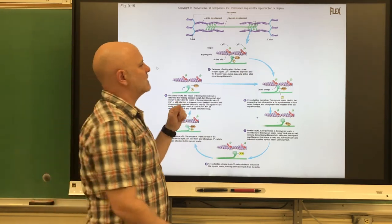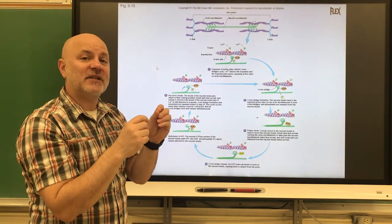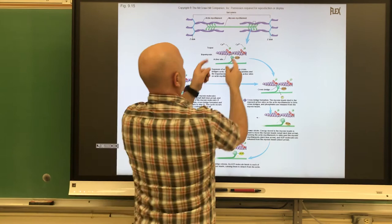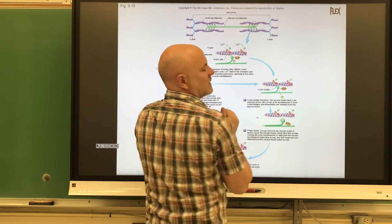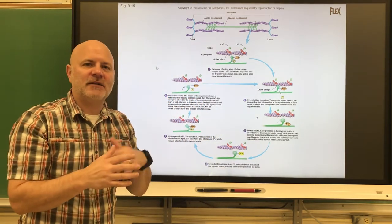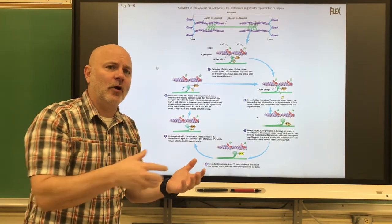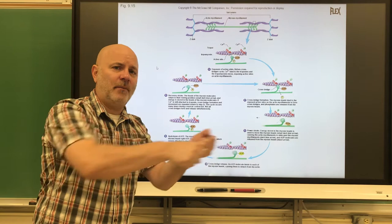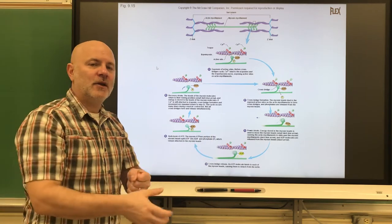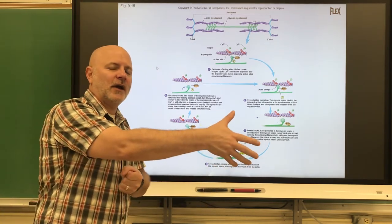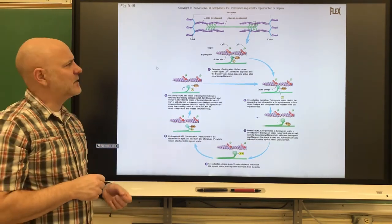To summarize contraction: calcium binds to troponin, changing the troponin-tropomyosin complex shape, allowing myosin to bind to actin. The myosin grabs and pulls, bringing the Z-discs closer together. Only half of the myosin heads are bound at any one time — it works like hand-over-hand pulling of a rope: half are bound, grabbing, and pulling, while the other half are re-cocking, ready to grab and pull.